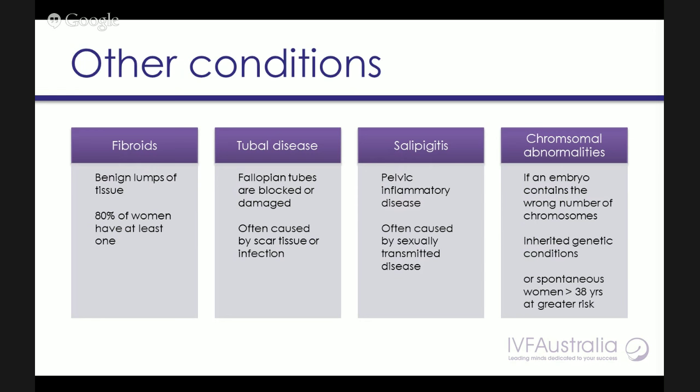There are also chromosomal issues. Sometimes you may carry a small breakage in your chromosomes and DNA that makes it harder to form a healthy embryo, and it may take longer to get pregnant. You may know of an inherited disease in your family, in which case we may need to utilise IVF techniques to help eliminate that disease being passed on to your children. Chromosomal abnormalities don't just happen in eggs but can also happen in sperm, and IVF Australia has advanced technology available to determine this.